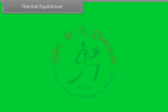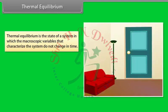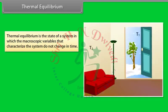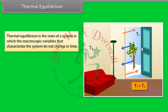Thermal equilibrium is the state of a system in which the macroscopic variables that characterize the system do not change in time. For example, in winter, when you open the door of your house, heat moves out. After a few minutes, the temperature inside and outside the house becomes the same. This is due to thermal equilibrium.